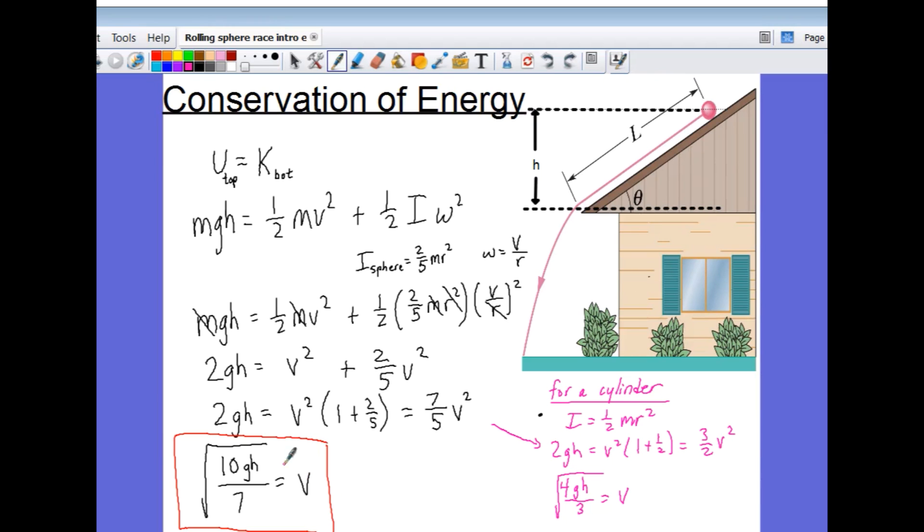So there we saw the velocity did not matter on the radius or the mass of the ball. All the balls reached the bottom of the ramp at the same time, showing that their velocity was the same.